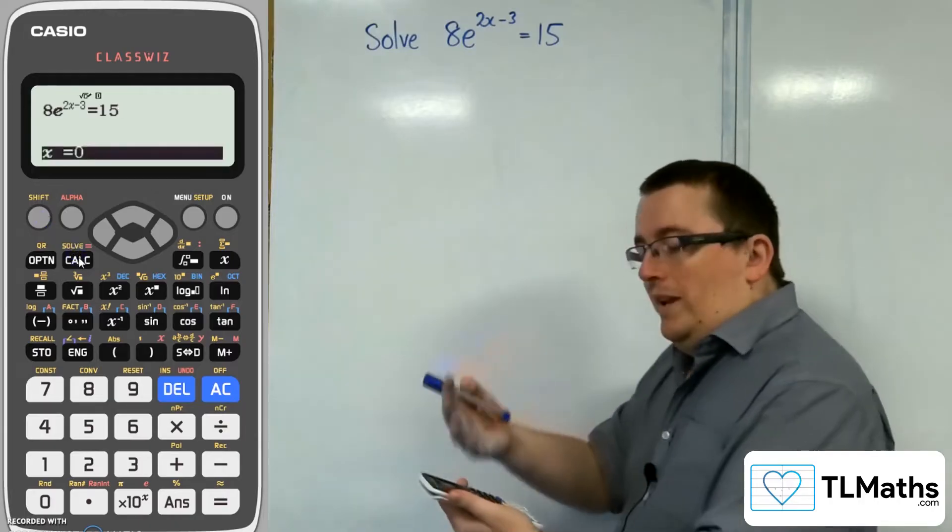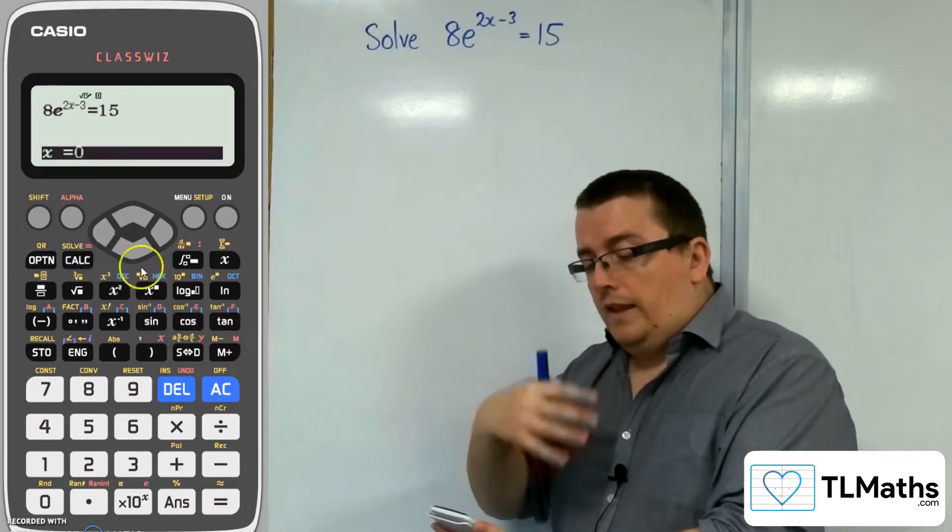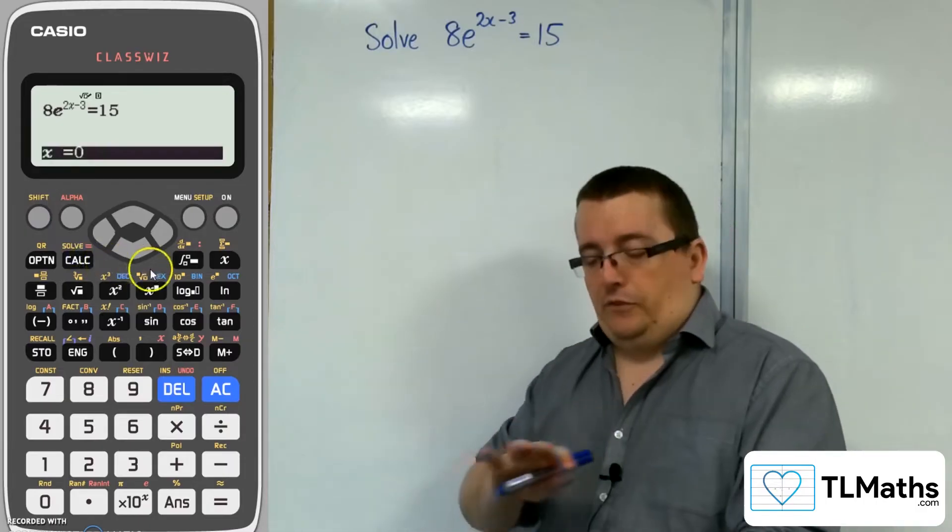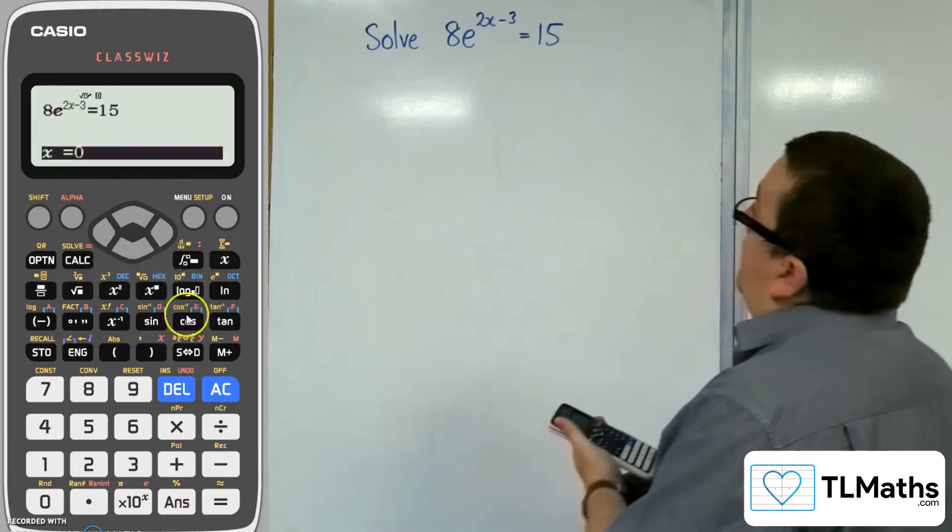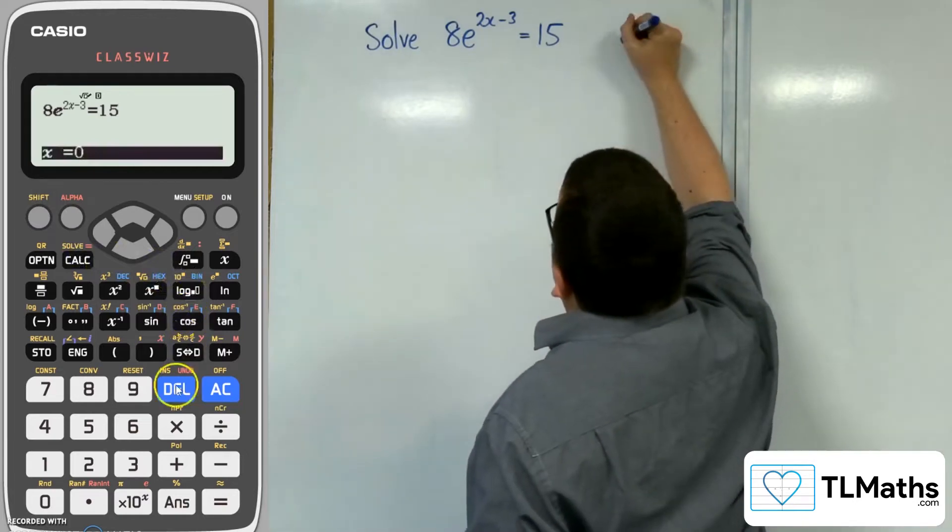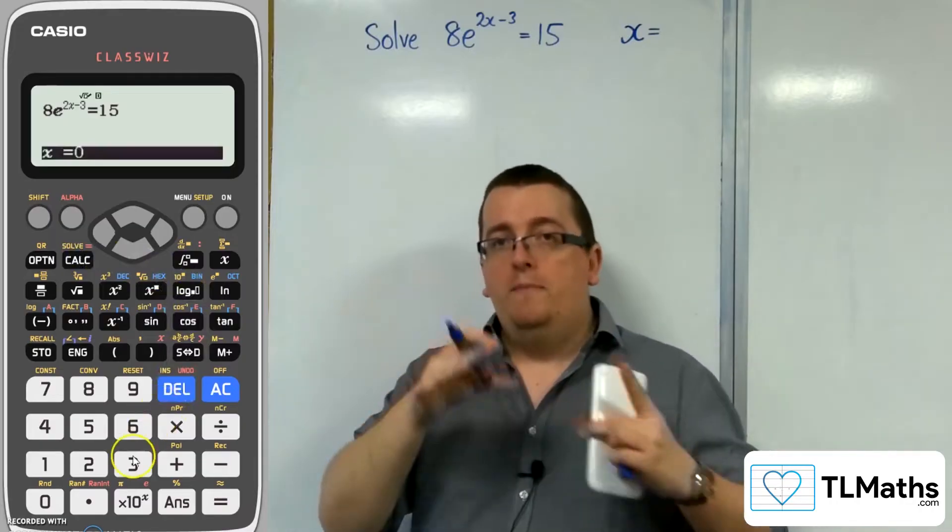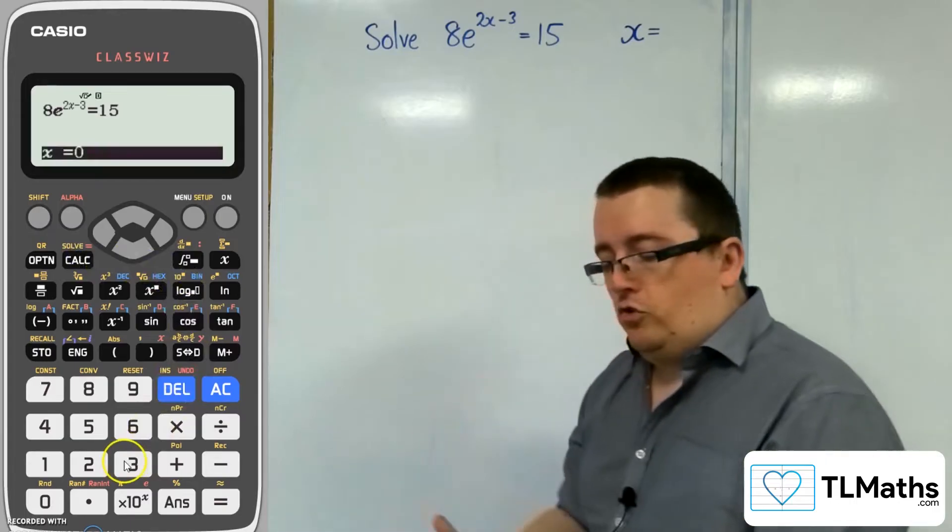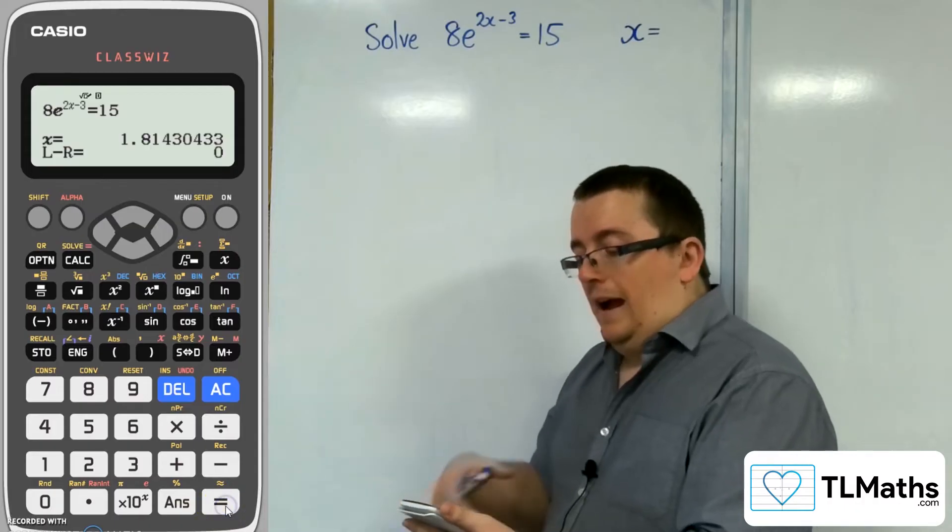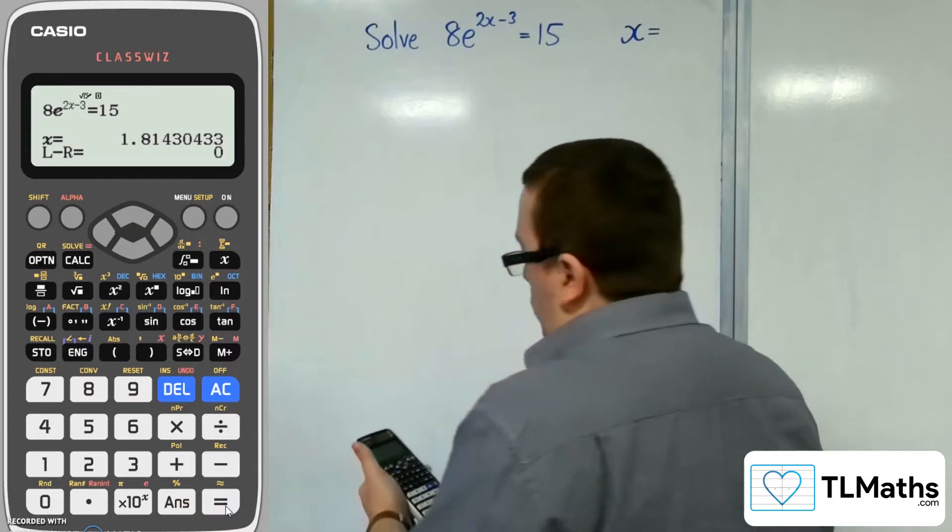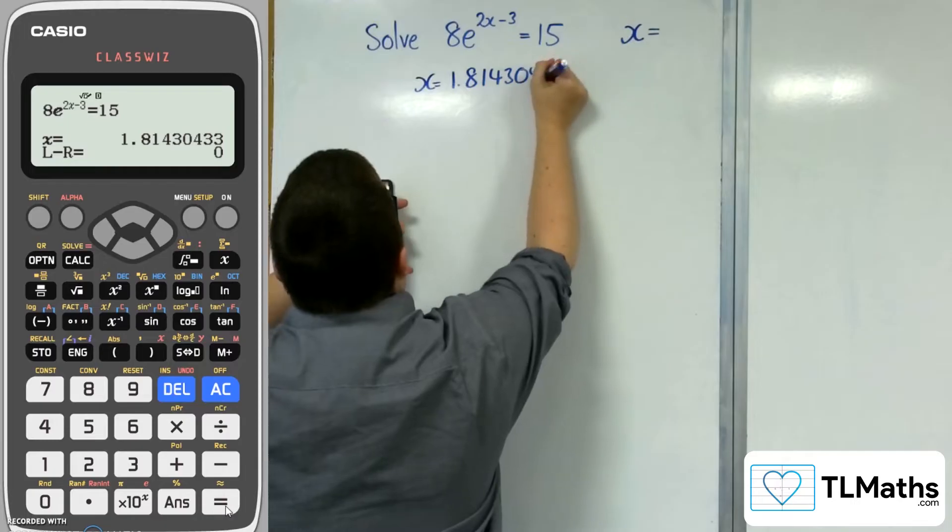This is what always confuses students: it comes up with this black bar at the bottom saying x equals something. Now that is not the answer to this question. What it's actually asking you is, where would you like me to start looking? It's using a numerical method to home in on the solution. So I'm going to try x equals 2, press equals, and then press equals again. Your calculator might have to think about it for a bit, but it will come up with x = 1.81430433.